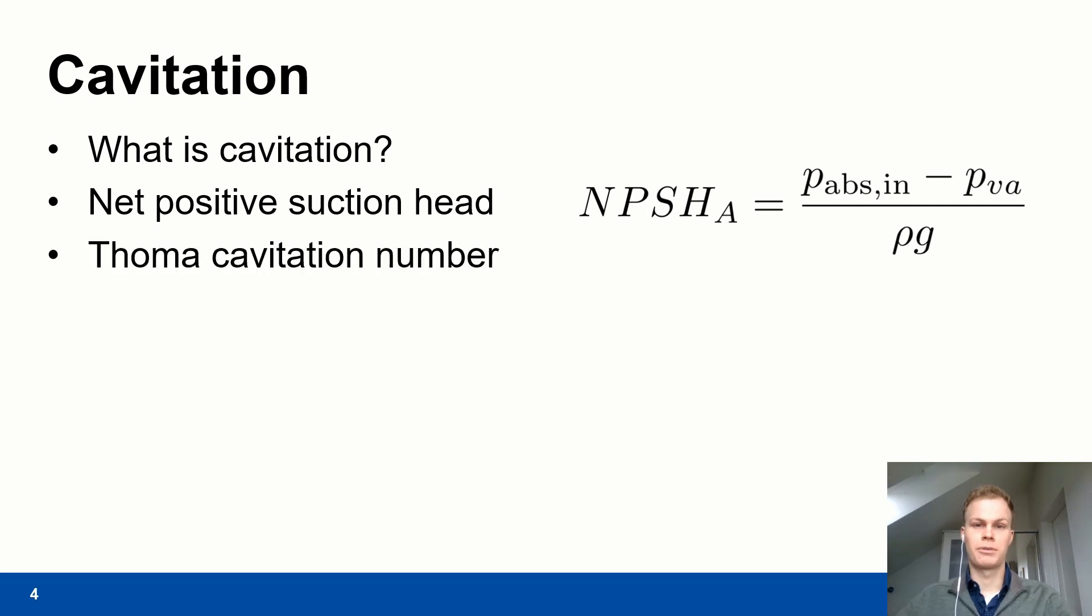The Thoma cavitation number is a dimensionless term indicating about the same as the net positive suction head and it is defined as the available net positive suction head divided by the head of the turbine.